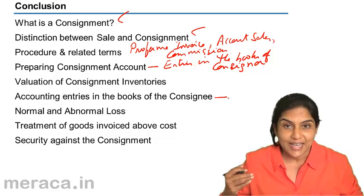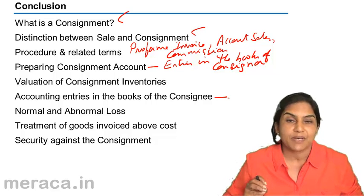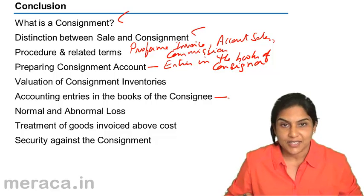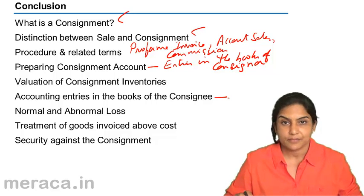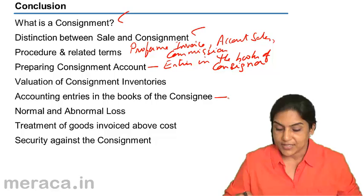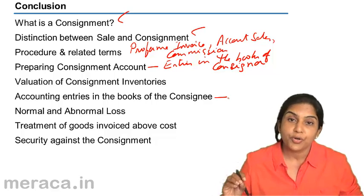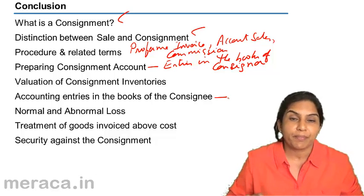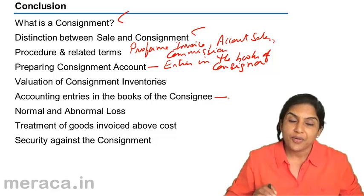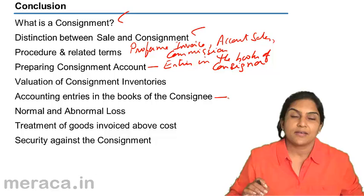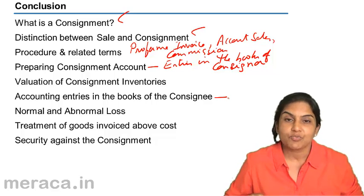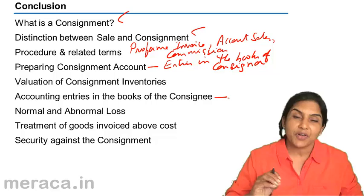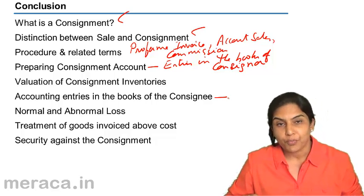However, when the consignee incurs expenses, the consignee expects to be reimbursed by the consignor, and therefore debits the consignor's account. Commission for the consignee is an income receivable from the consignor, and therefore the entry passed is consignor account to commission. Bad debt losses would ordinarily be borne by the consignor, not the consignee. However, if the consignee receives del credere commission, then bad debt losses would be borne by the consignee, and such losses are set off against the commission, with the net balance only transferred to the profit and loss account.